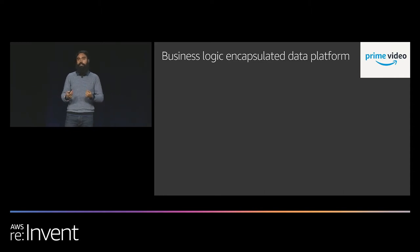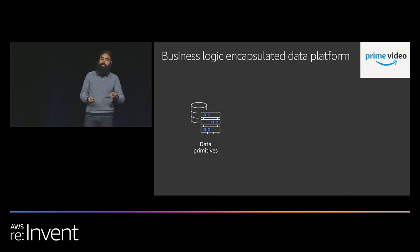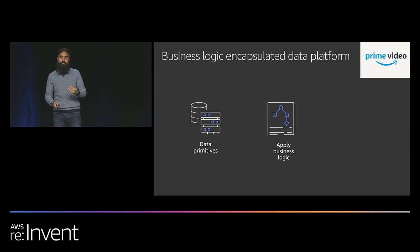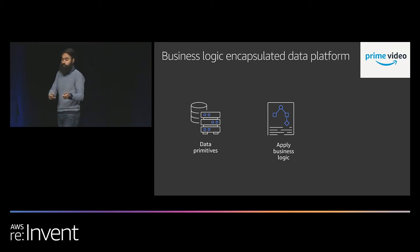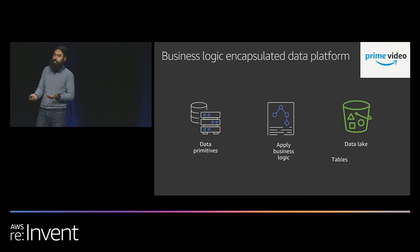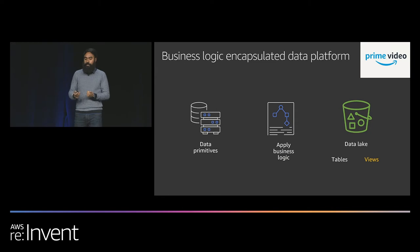Taking a step back — we are a data engineering and data platform team. We gather data from multiple sources: service teams, other data engineering teams. Once we have what we call a data primitive, through various technologies, we apply the business logic from metrics governance, then push to the data lake built on S3. We have persistent tables, and importantly we also build views on top of the data lake — a key point we'll return to. It's a very simple pub-sub mechanism.